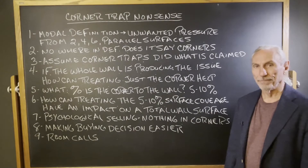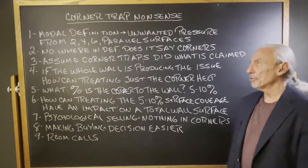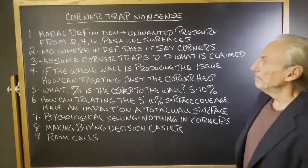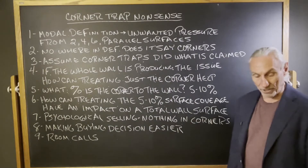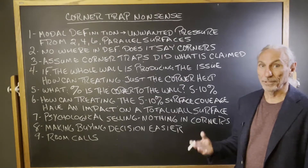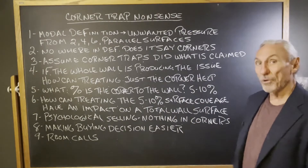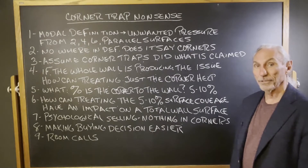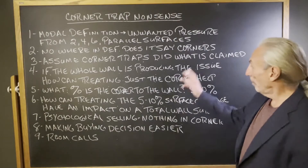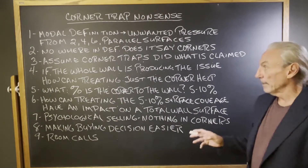Think about it. How can just a corner cause a problem? It's the whole wall. For sake of discussion — because I get a lot of calls on this — let's assume that the corner would treat the whole wall surface, because that's what's causing the problem. If the whole wall is producing the issue, how can treating just the corner help?